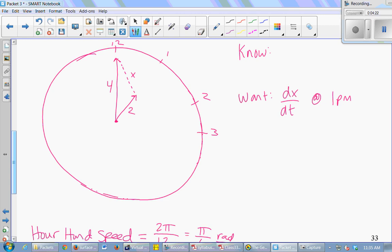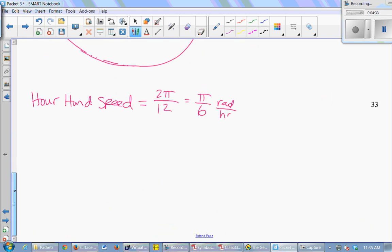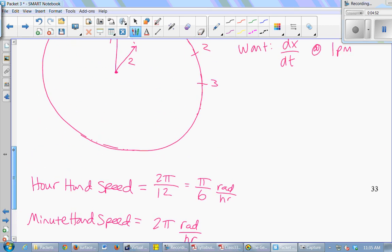So the angle between the 12 and the 1, or the 1 and the 2, or the 2 and the 3 is always π/6. And the hour hand moves from the 12 to the 1 in one hour. π/6 radians per hour. But then the minute hand... How long does it take the minute hand to do one full cycle around the clock? An hour. So this is 2π radians in one hour. For the minute hand. Alright. So let's go back.